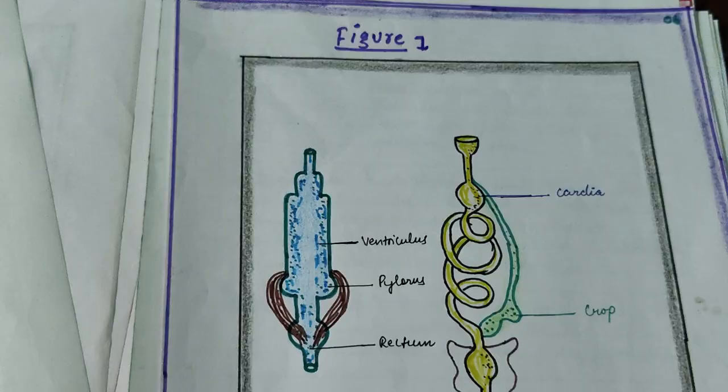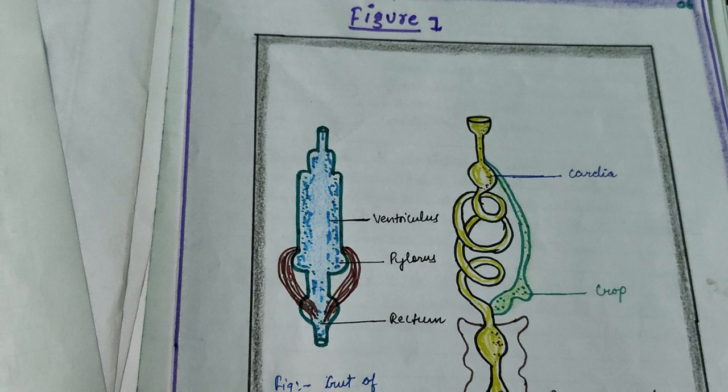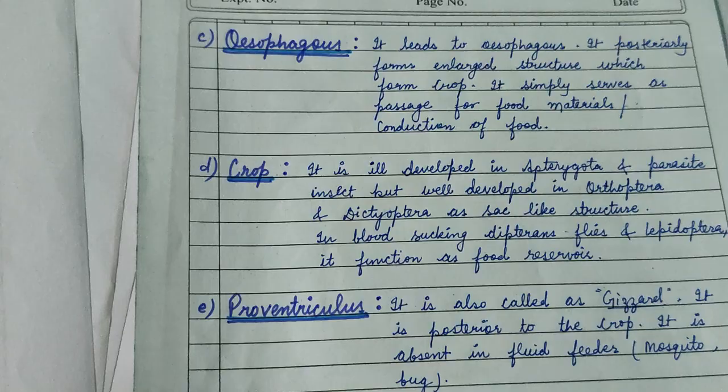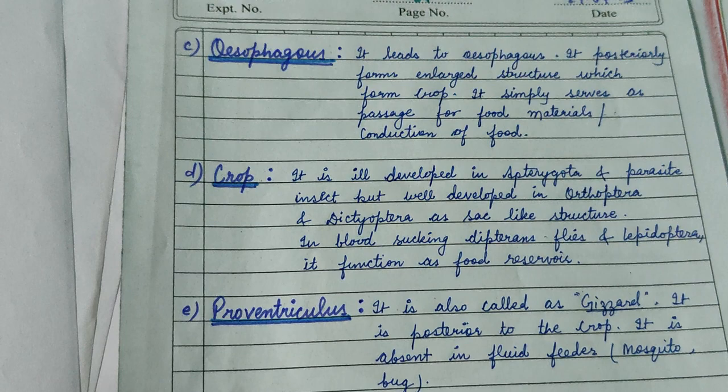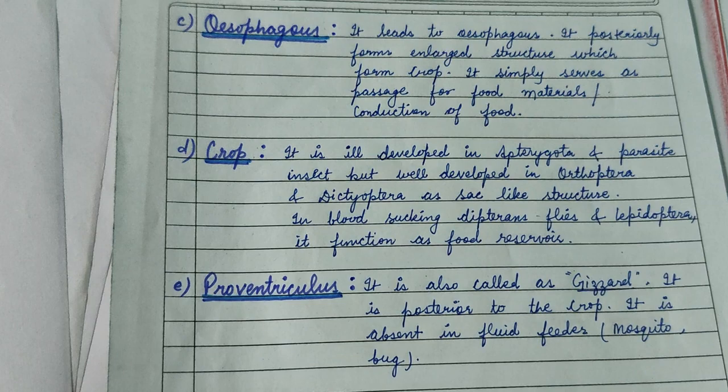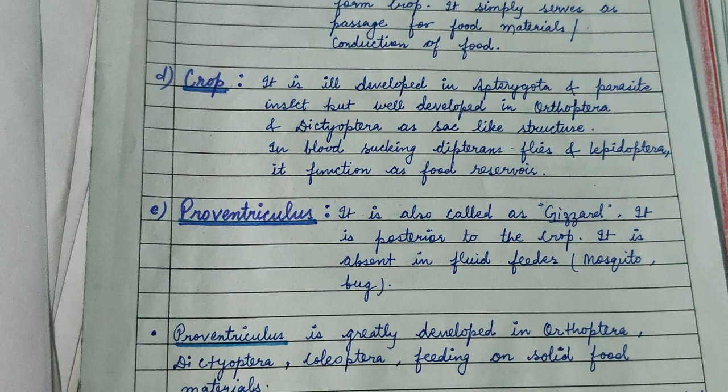Here is a picture of some modifications of the alimentary canal in different arthropods — in Lepidoptera like butterfly larvae and the gut of the housefly. The esophagus is a tubular structure that ends with the crop. The crop is developed in dietary guts and is mainly used as food reserve; in blood-sucking insects, flies, and Lepidoptera it functions as a food reservoir.